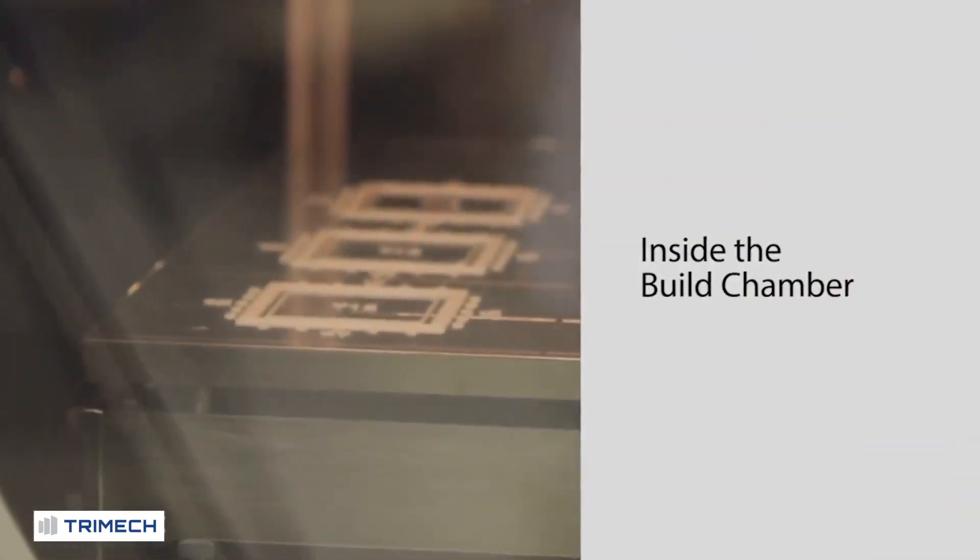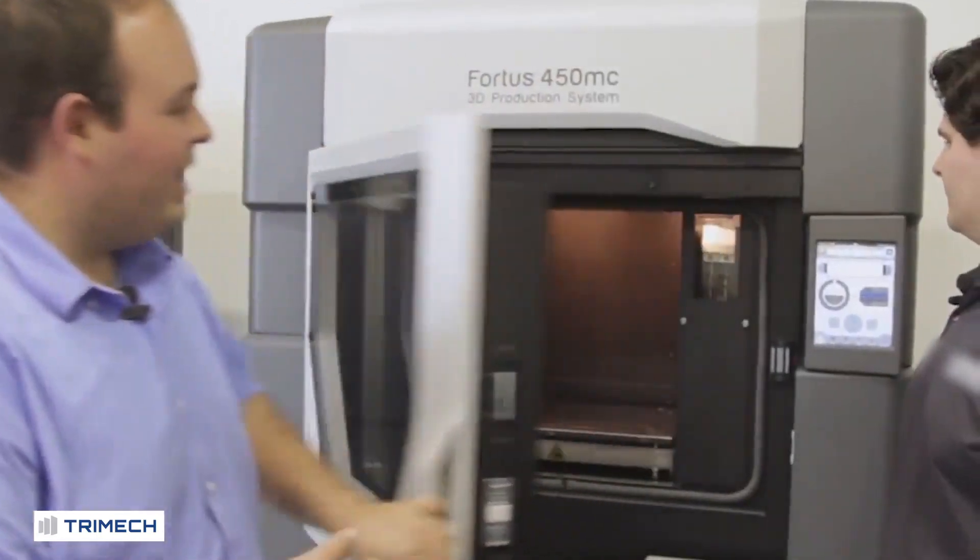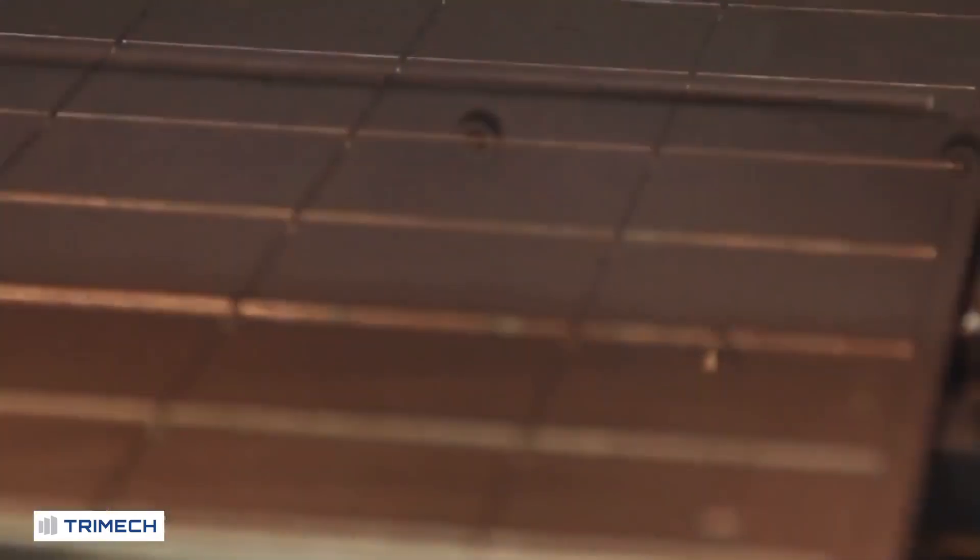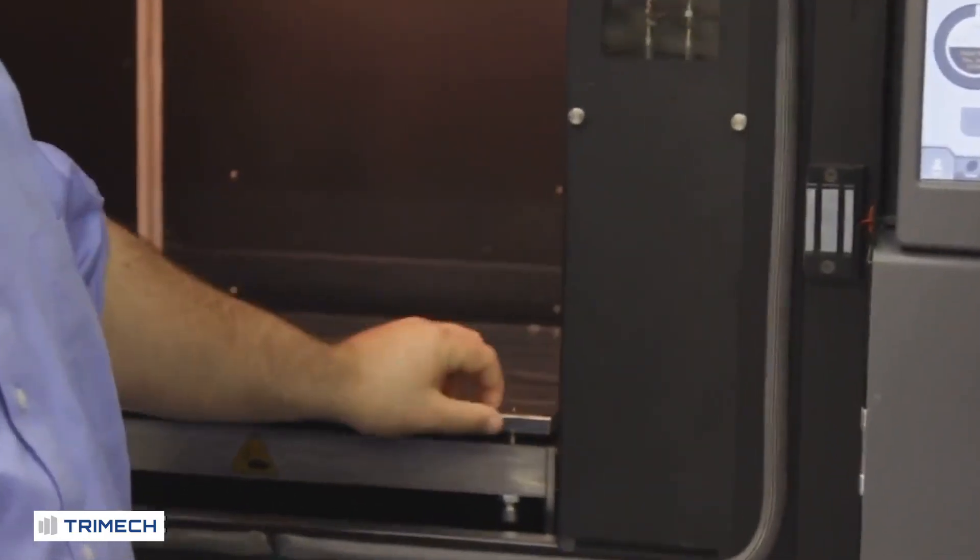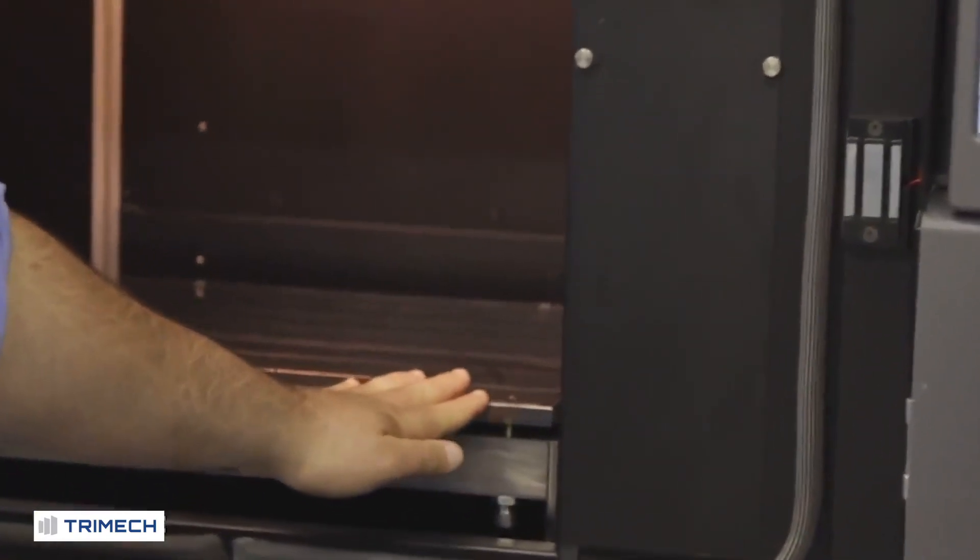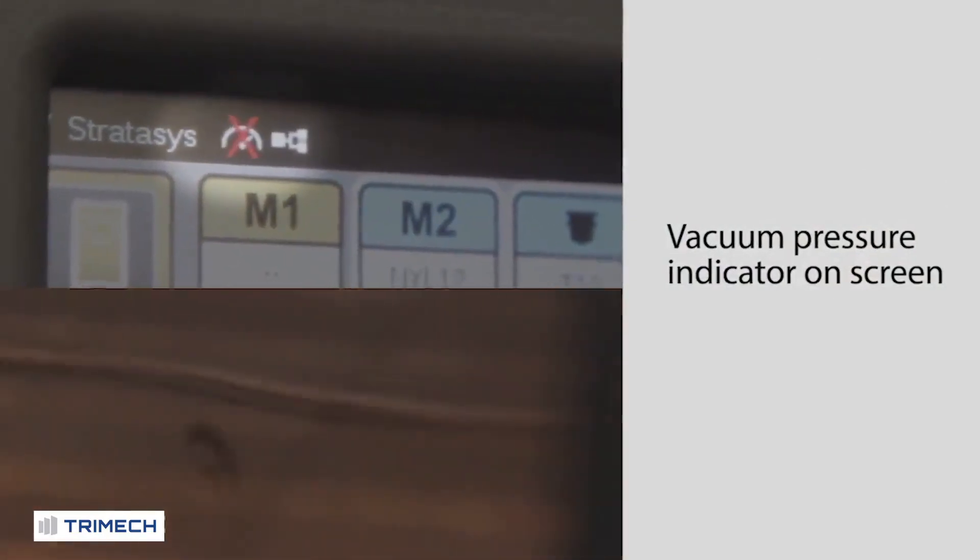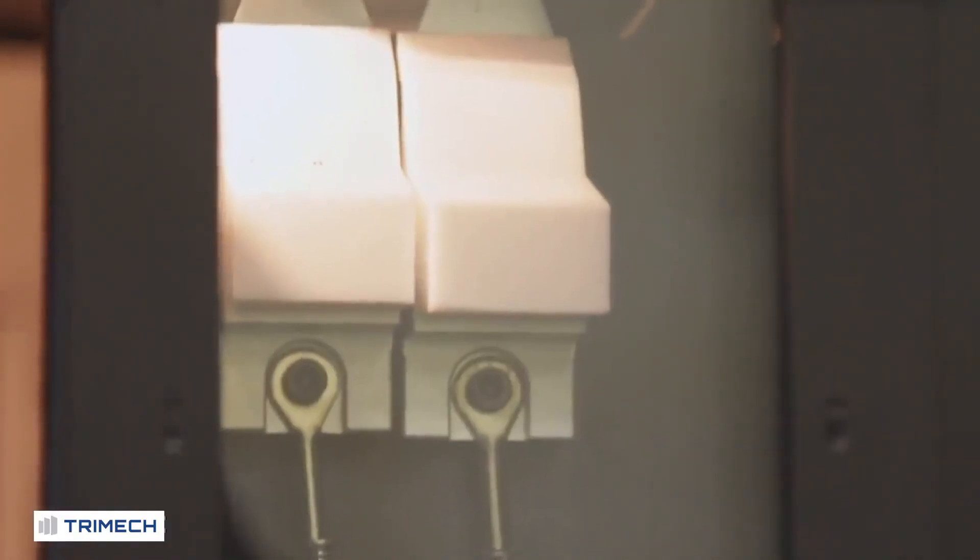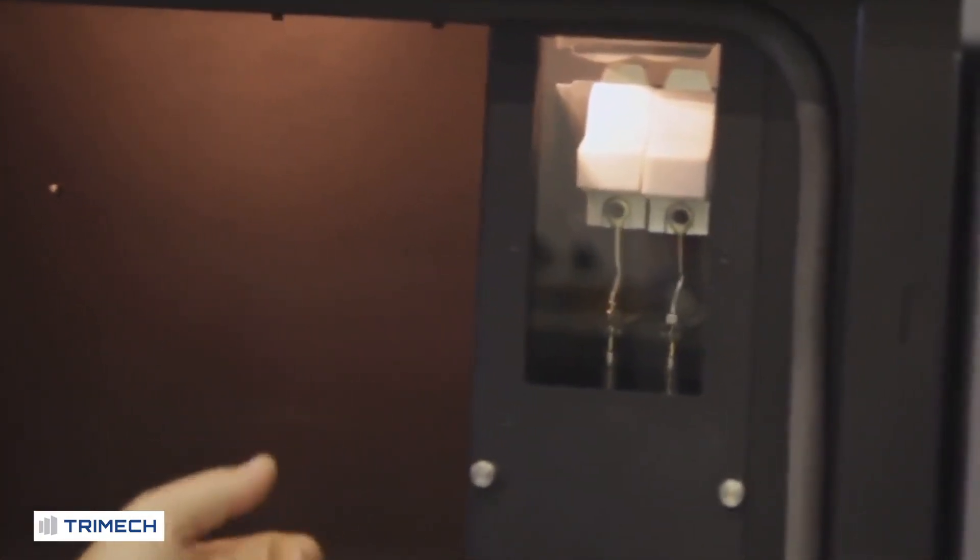Now we're going to take a look at the Fortis 450 oven, which is the build chamber of the machine. Inside, as we said before, we have a 14 inch by 16 inch by 16 inch tall chamber. We have a plastic build tray that is secured with vacuum pressure. The nice thing about the Fortis 450, as opposed to the previous generation with the 400, is you can easily see whether or not you have vacuum pressure. And we also have a window in our new machine that allows us to easily see the tip wipe assembly and adjust the tips accordingly.